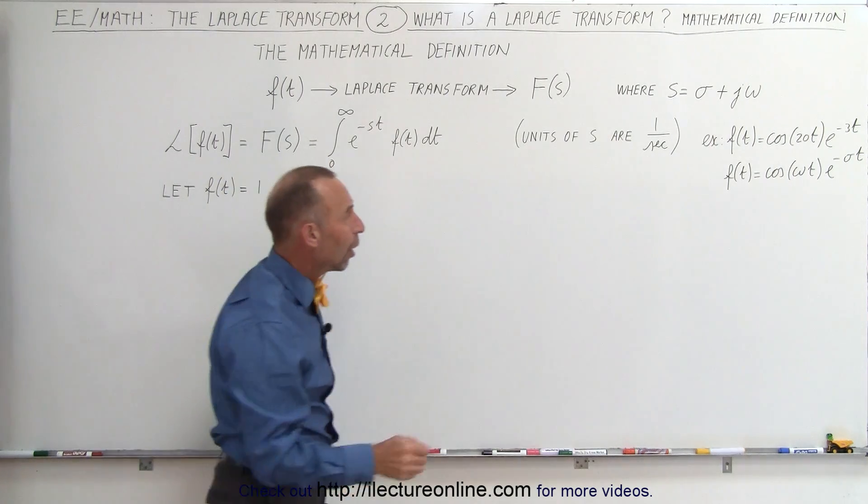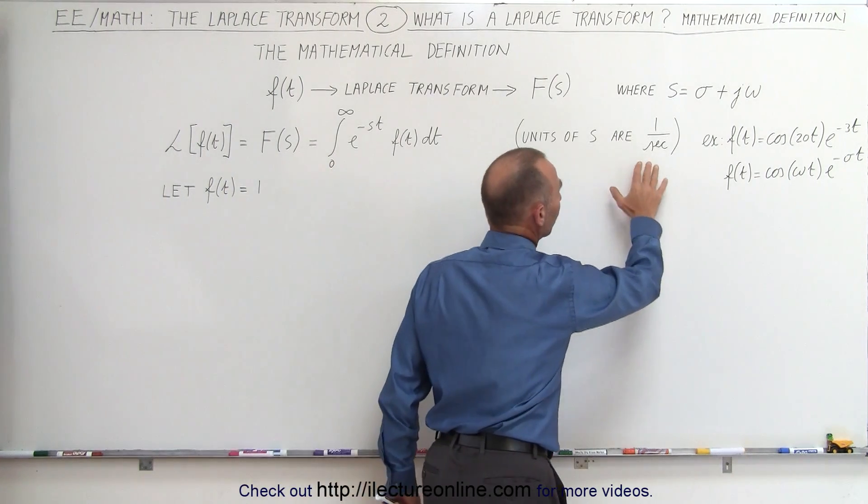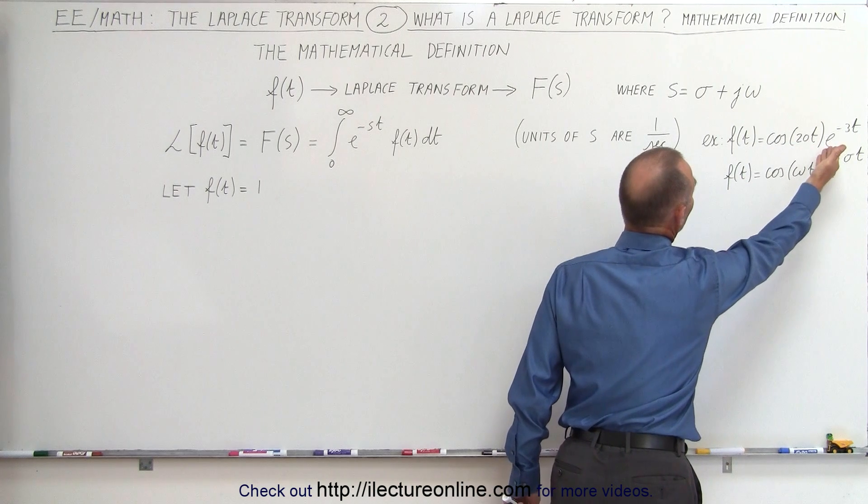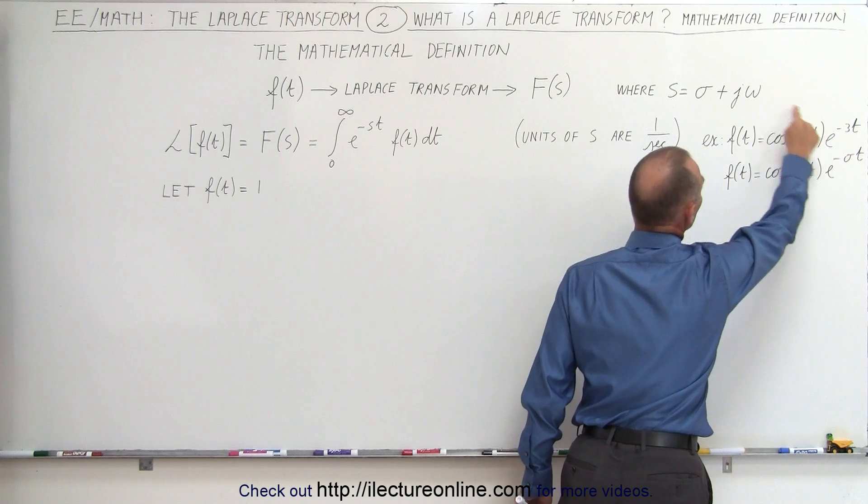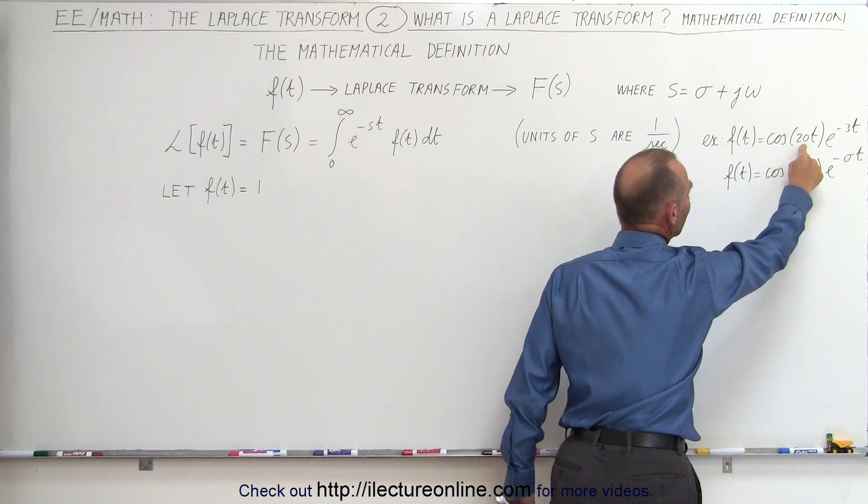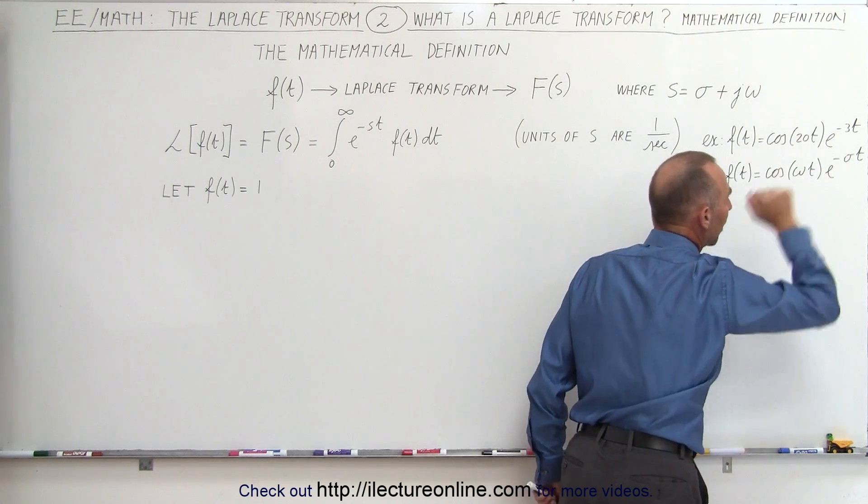The units of s are 1 over seconds. Notice that if we have an equation that looks like this, where omega is represented by the number 3 in the decay portion of the function, omega is the 20 right here, which is the oscillating part of the function.